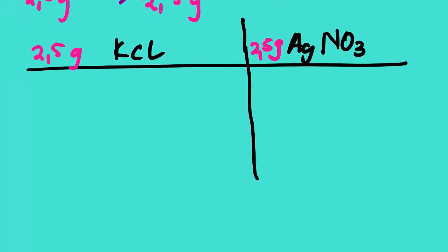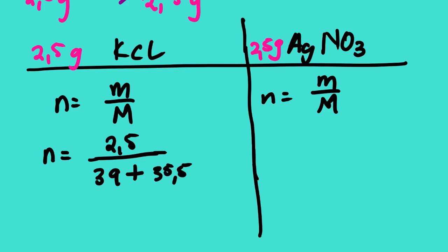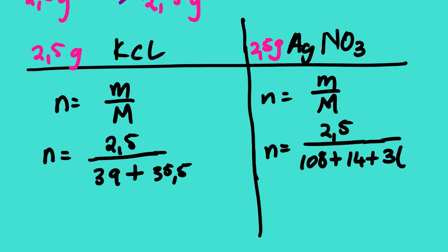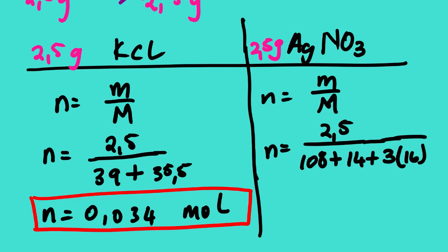Let us go ahead and find the number of moles of both reagents. N equals M over M (molar mass). We have 2.5 grams divided by the molar mass of potassium chloride. The molar mass of potassium is 39 plus chlorine is 35.5. So we have 0.034 mol of potassium chloride.